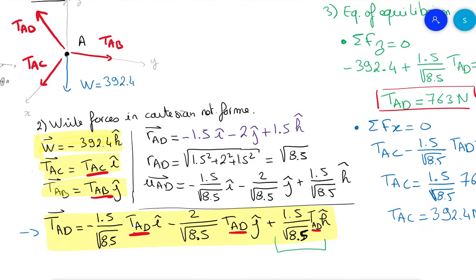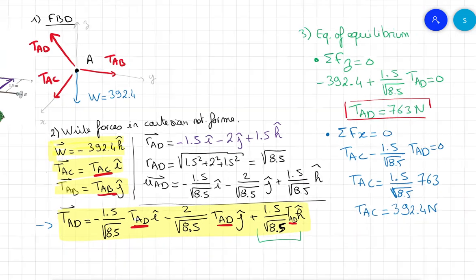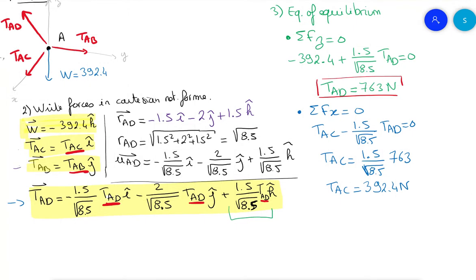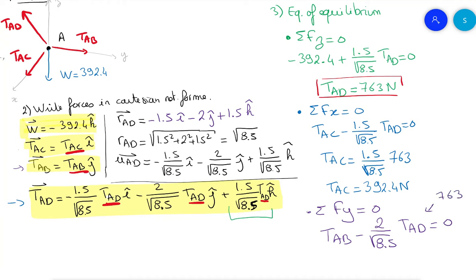Finally, for the j-hat direction: sum of forces on Y equals zero. We have TAB minus 2 divided by the square root of 8.5 times TAD equals zero. Substituting TAD equals 763 newtons, TAB equals 2 times 763 divided by the square root of 8.5, which gives TAB equals 523 newtons.